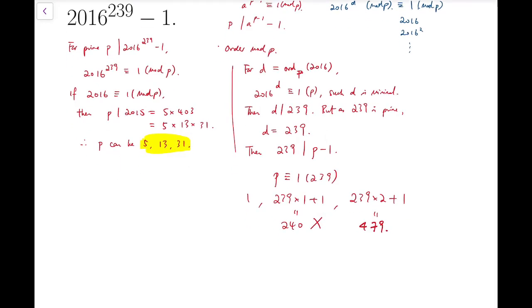We can try dividing 479 by all primes like 2, 3, 5, 7, all the way up to 19, and it's not divisible by any of them, so 479 is actually prime.